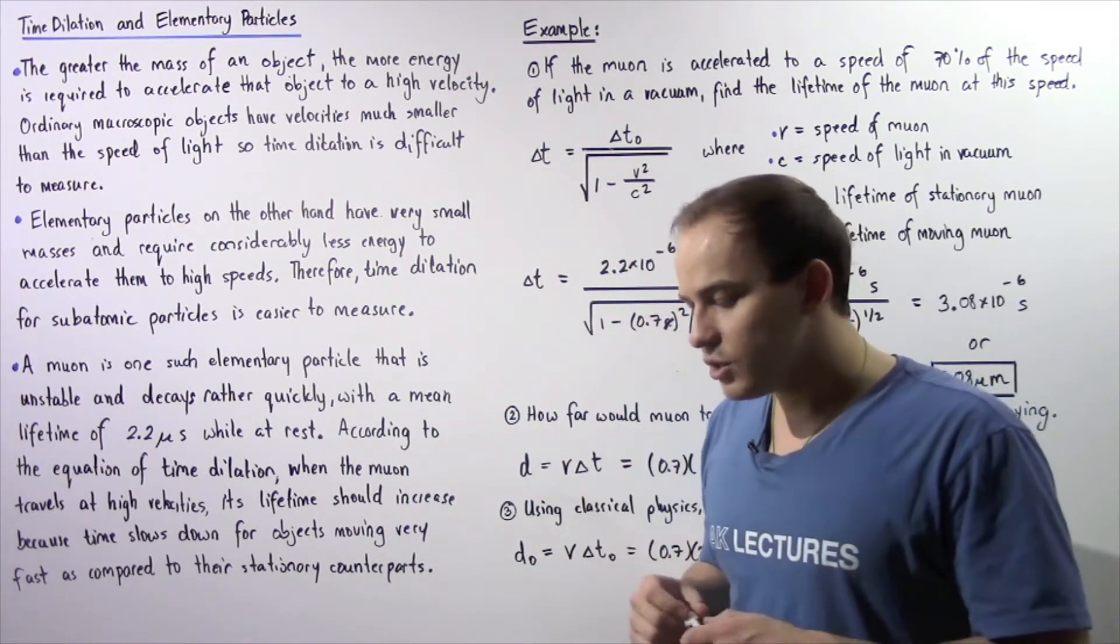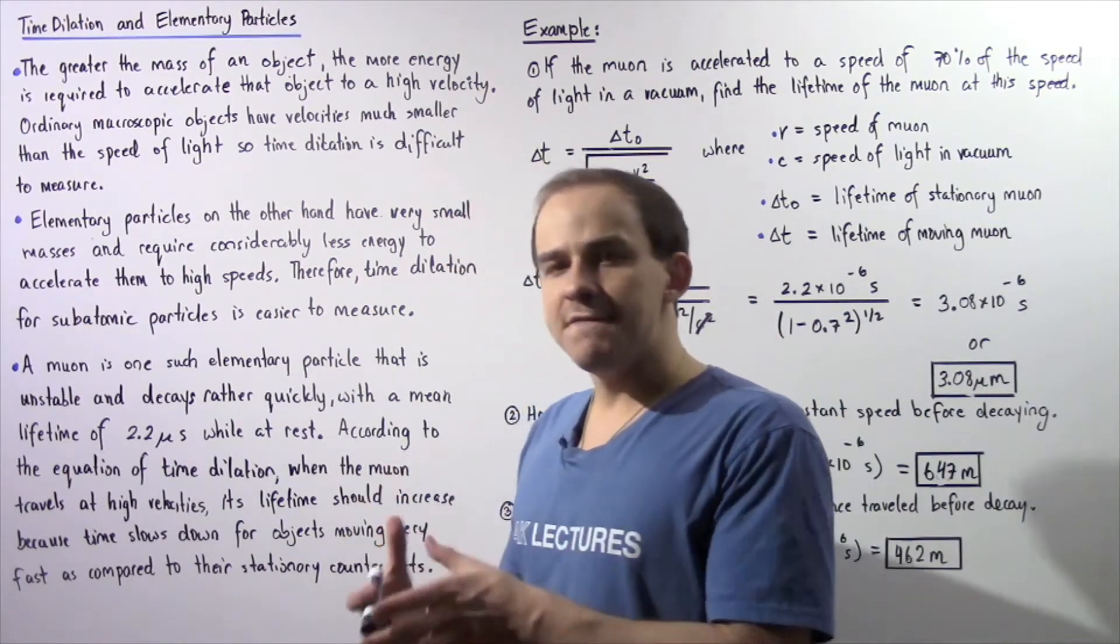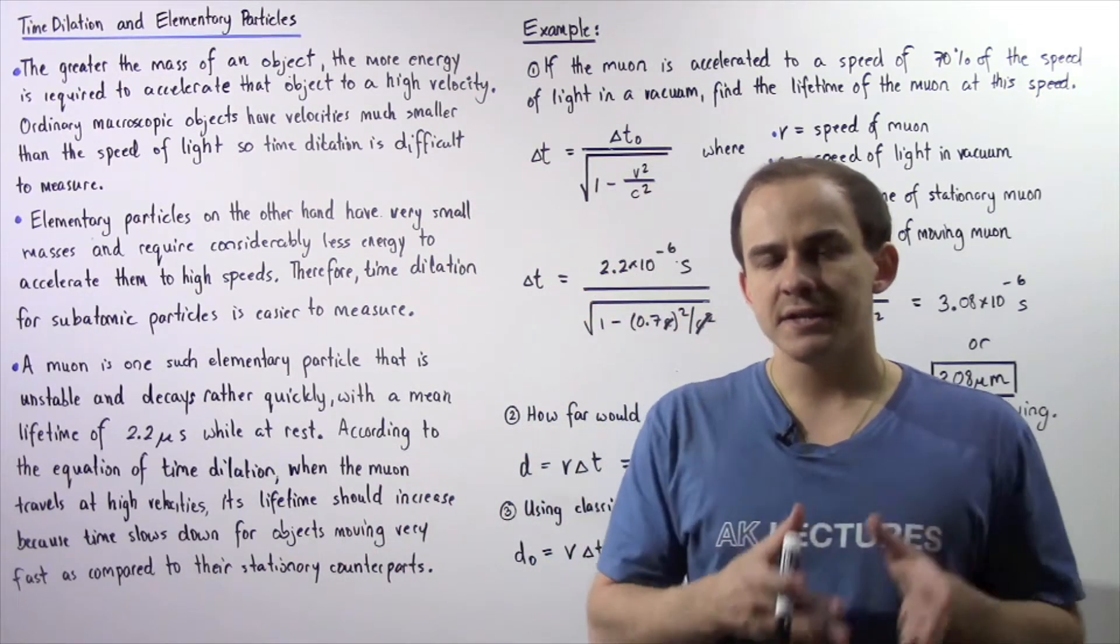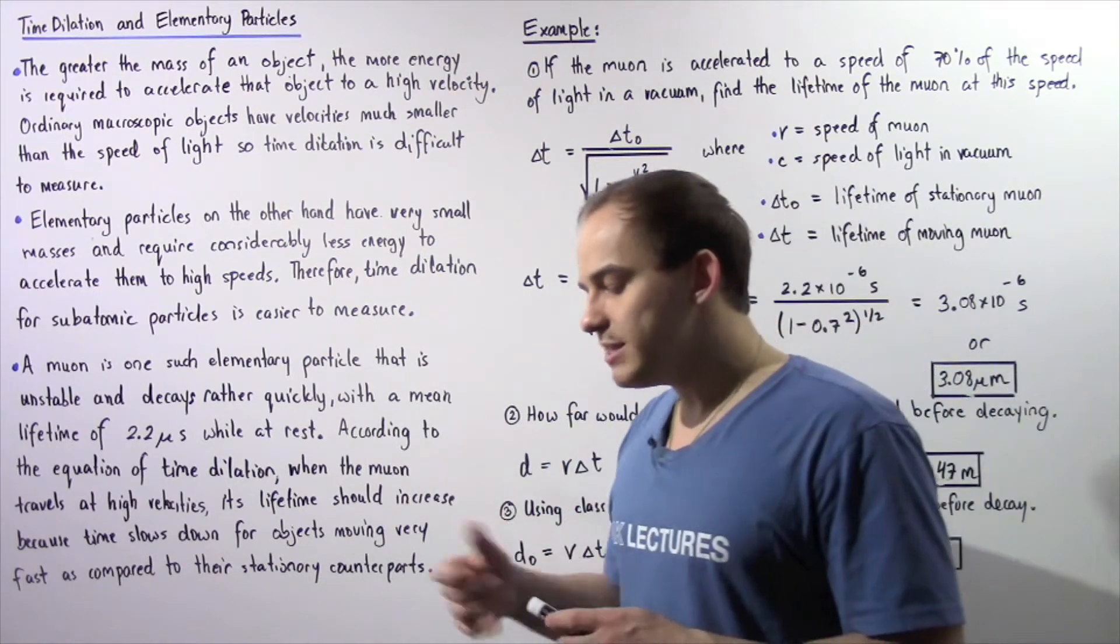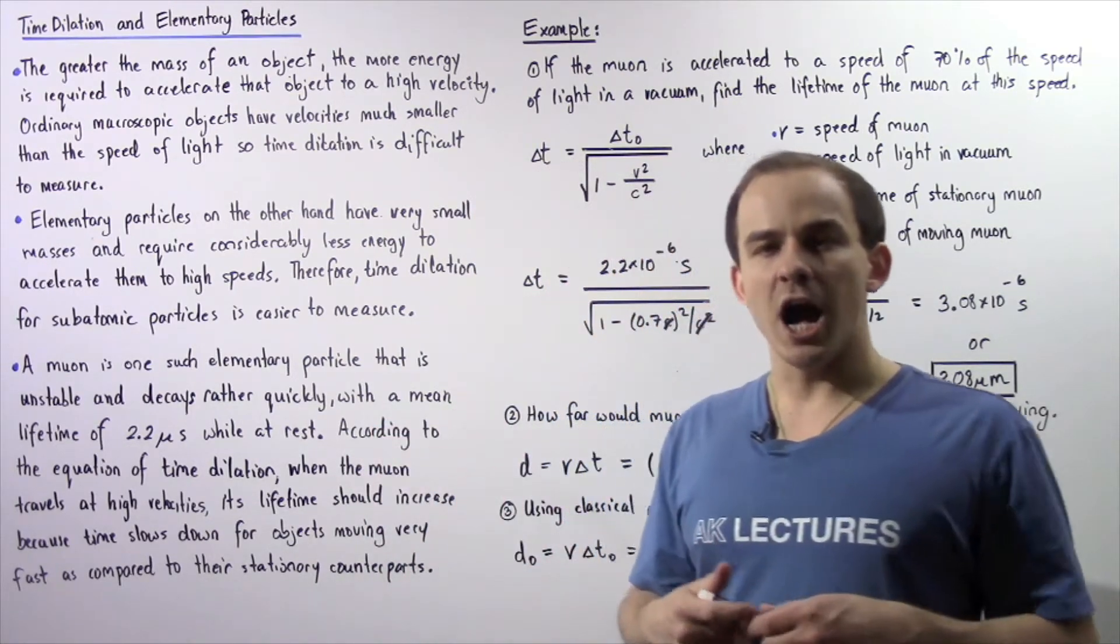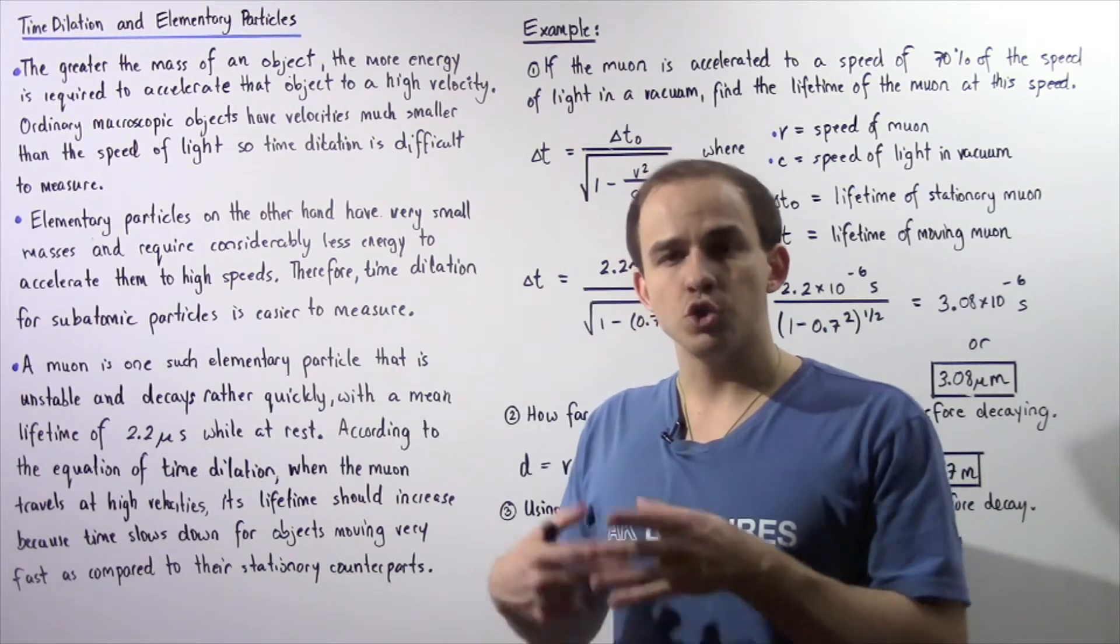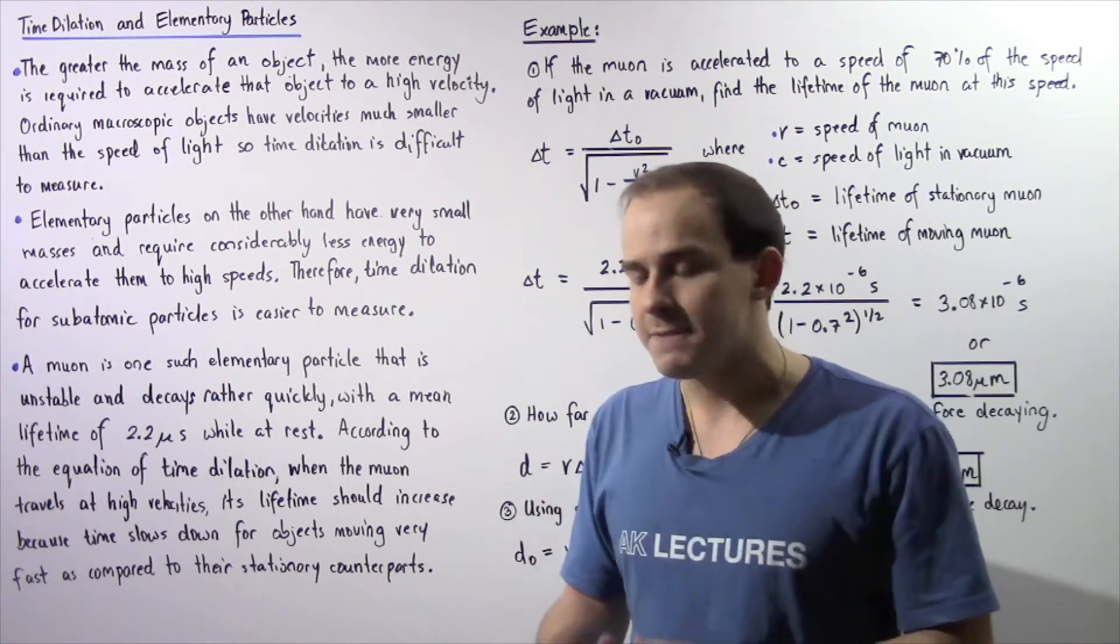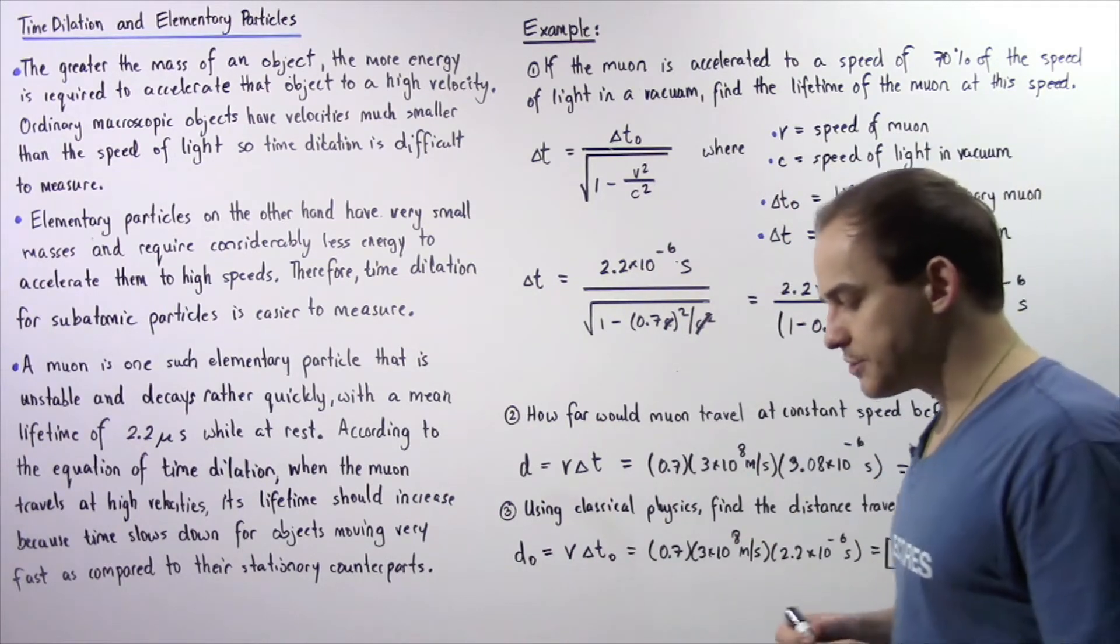And that's exactly why ordinary macroscopic objects have very small velocities compared to the velocity of light, because it requires a great deal of energy to accelerate those macroscopic objects, and that's exactly why it's very difficult to measure time dilation experimentally using macroscopic ordinary objects.